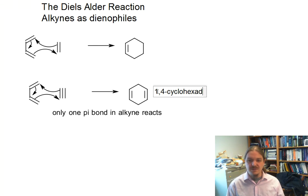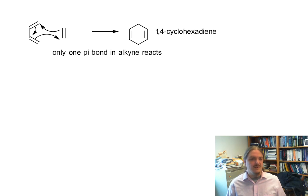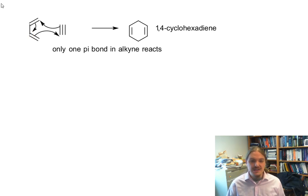This is 1,4-cyclohexadiene, and of course, other substituents are going to make this product more complicated. Just like in the case with alkenes, the reaction behaves better when there are electron withdrawing groups on it. But the same is true with alkynes and an electron withdrawing group.